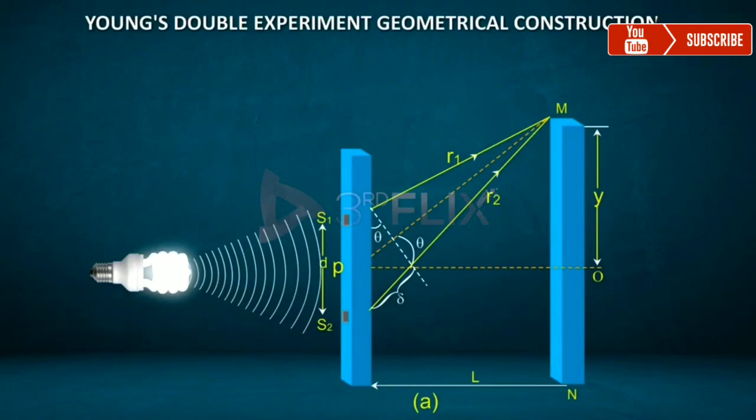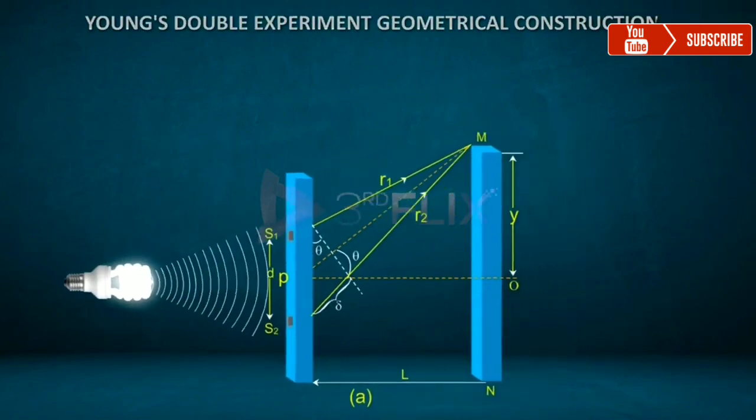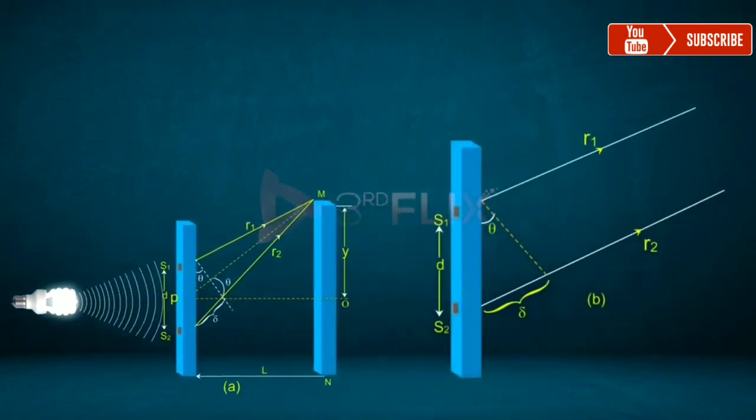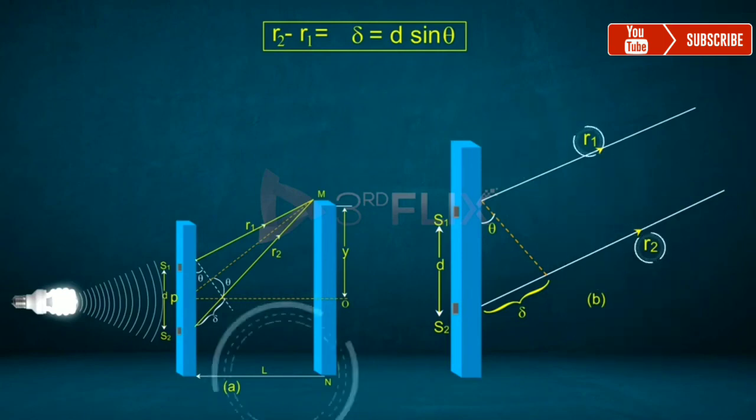Young's double slit experiment geometrical construction is as shown. Path difference R2 minus R1 is equal to delta, which is equal to D sine theta. Here, we consider that R1 and R2 are parallel, and L is much greater than D.